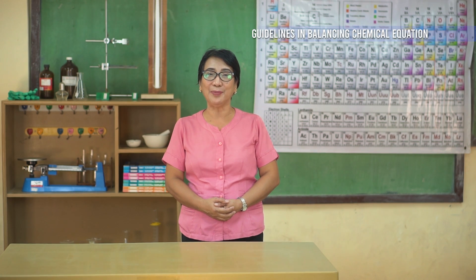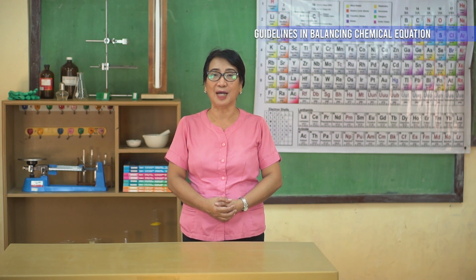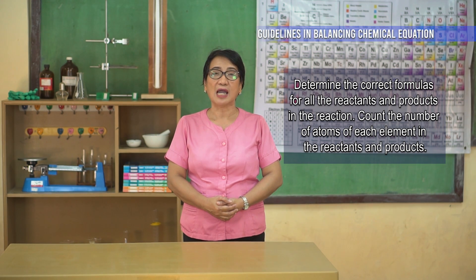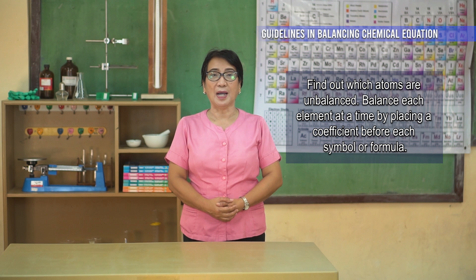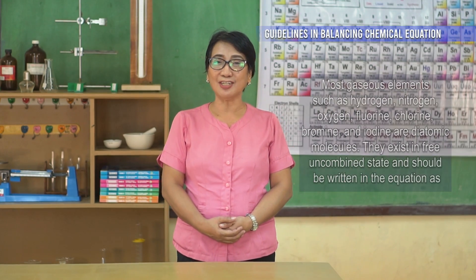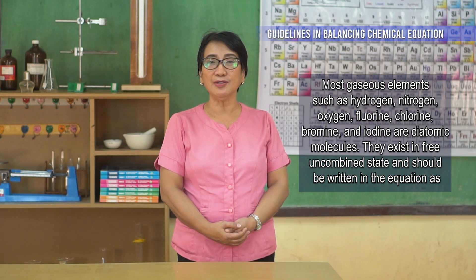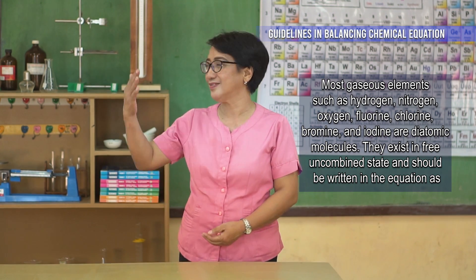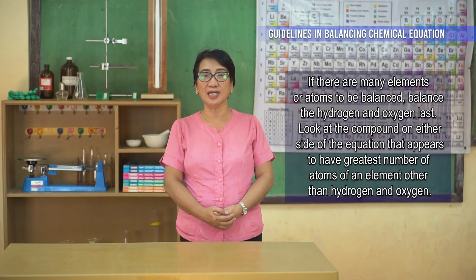Here are some guidelines that will help you in balancing a chemical equation. The first and most important rule is that the formulas are never changed in balancing an equation. First, determine the correct formulas for all the reactants and products in the reaction, then count the number of atoms of each element in the reactants and products. Second, find out which atoms are unbalanced and balance each element at a time by placing a coefficient before its symbol or formula. Third, most gaseous elements such as hydrogen, nitrogen, oxygen, fluorine, bromine, and iodine are diatomic molecules. They exist in free and combined state and should be written as such in the equation. Fourth, if there are many elements or atoms to be balanced, balance the hydrogen and oxygen last. Look at the compound on either side of the equation that appears to have the greatest number of atoms of an element other than hydrogen and oxygen.